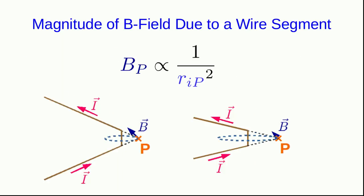We can also vary the distance between the wire segment and the point where we're looking at the field. And we then find that the magnetic field strength goes like so many other fields we've looked at as 1 over R squared.